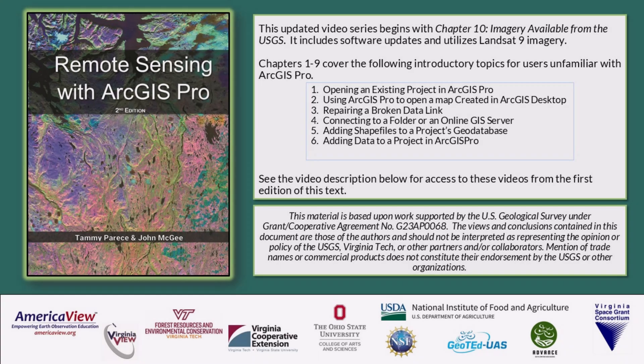This video tutorial series builds on ongoing and previous collaborations and contributions provided by the USDA NIFA through the ADVANCE Project, the National Science Foundation through the GeoTed UAS Project, the Ohio State University, and the Virginia Space Grant Consortium. This video series is associated with the Remote Sensing with ArcGIS Pro 2nd Edition book. We will use Landsat 9 imagery in this series and begin with Chapter 10. Links to resources, including free access to the textbook and videos for Chapters 1–9, are available in the video description below.